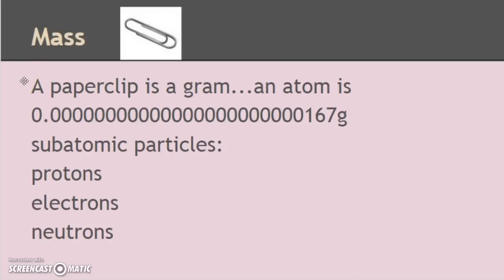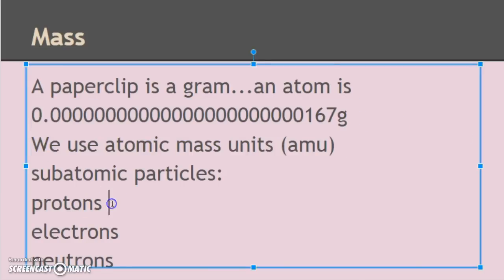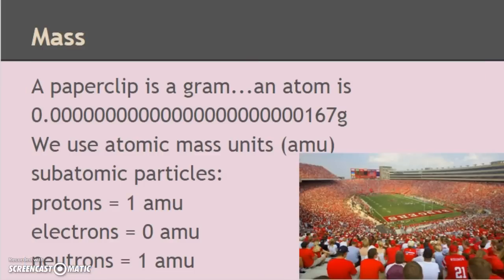A paper clip is 1 gram. An atom is 0.00000000000000000000000000167 grams — that's 1.67 times 10 to the negative 24th. Crazy small. So instead of grams, we use atomic mass units, or AMU. Each proton weighs 1 AMU, each neutron weighs 1 AMU, and electrons weigh 0 AMU.